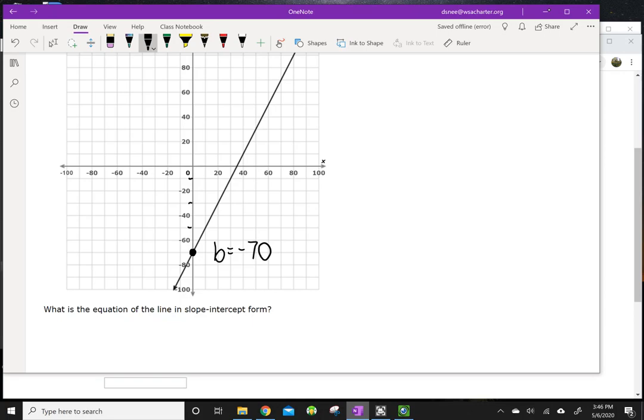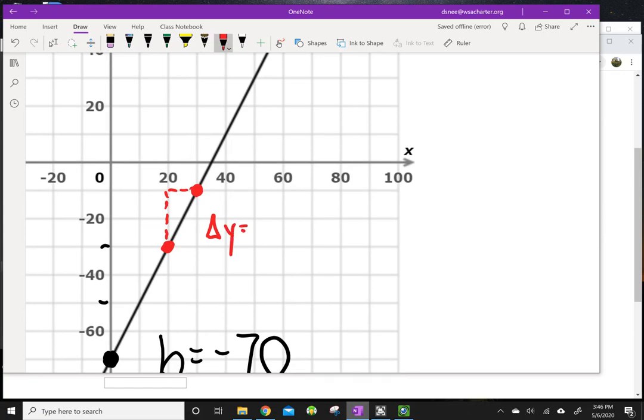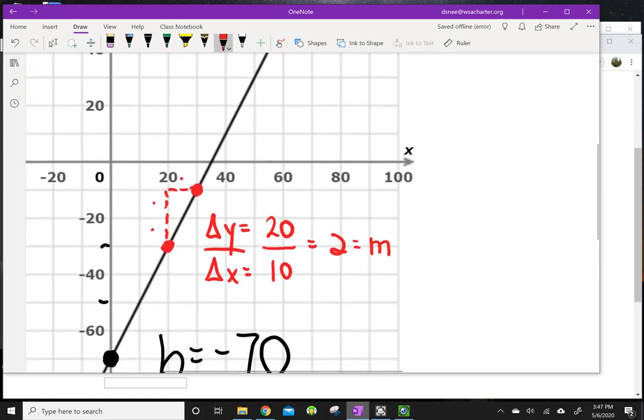Then, I'm going to pick two points of intersection. I'm going to do this in red. I've got a point right here, and I've got a point right here. And if I go up, and I go over, to connect those with the right triangle, I went up by 30. Change in y. I'm going to zoom in here. Change in y equals, I went 1, 2, and they're 10 each, so that's 20. And my change in x, I went 1 unit, and they're 10 each, so that's 20 divided by 10, which is equal to 2. So, my slope is 2, and my y-intercept is negative 70. So, my equation is y equals 2x minus 70.